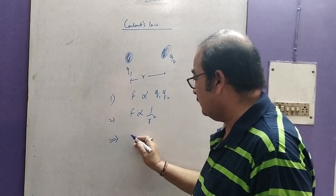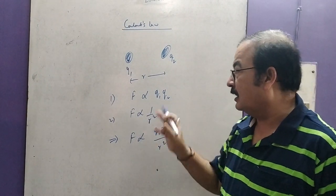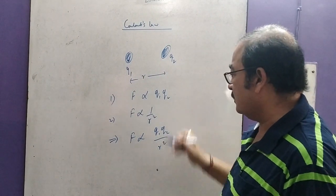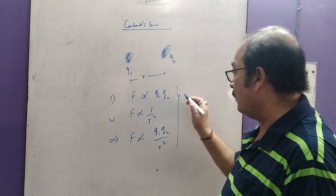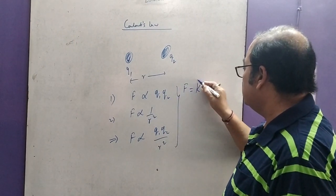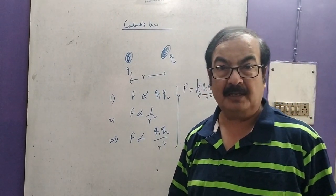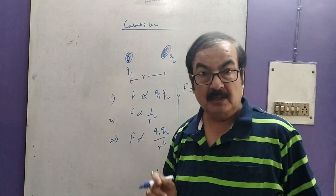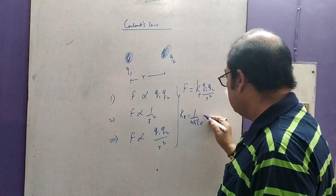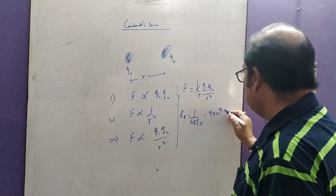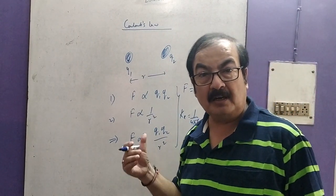If we join them, we can write F proportional to Q1 Q2 upon R squared. This is the general idea about Coulomb's law. Once we know this law, these two points can be combined in the form: F equal to small k times Q1 Q2 upon R squared. This k is the electrostatic constant Ke. Its fixed value in vacuum is 9 into 10 to the power 9 Newton meter squared per Coulomb squared.